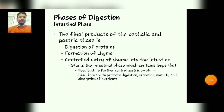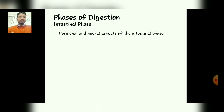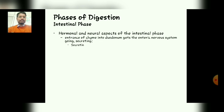These feed forward to promote digestion, secretion, motility, and absorption of nutrients. These signals are mainly hormonal and neural. The hormonal and neural aspects of the intestinal phase help in the entrance of chyme into the duodenum, which engages the enteric nervous system, where secretion mainly occurs.